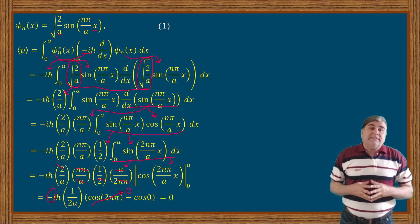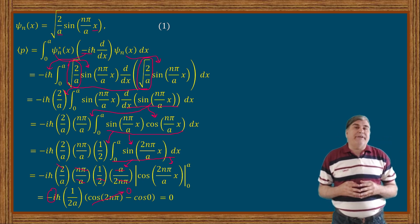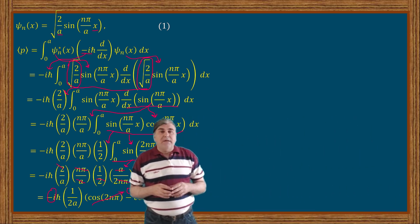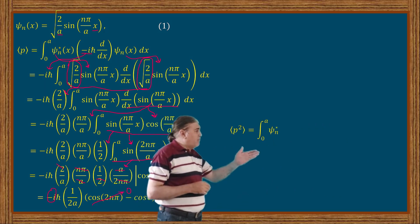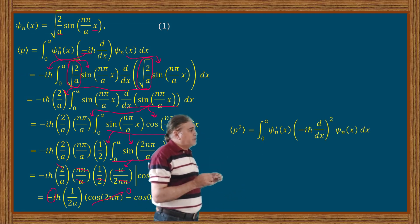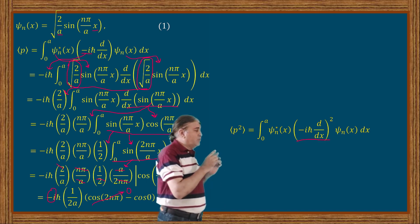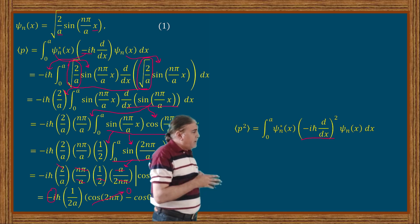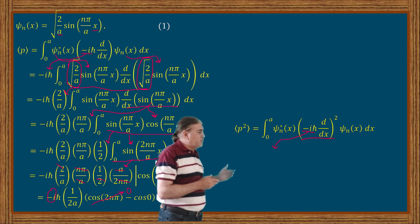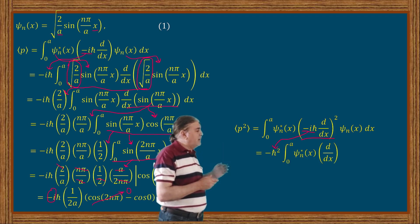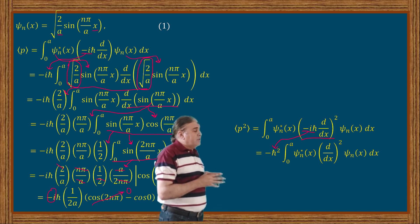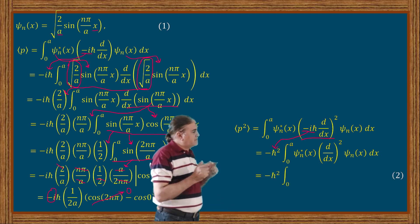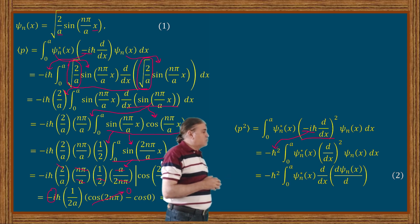Now let us see what happens to the expectation value of the square of momentum — is it also equal to zero? The expectation value of the square of momentum can be expressed by sandwiching the square of the momentum operator inside the conjugate of the wave function and the wave function, and integrating with respect to position x. Squaring minus iota h-bar gives minus h-bar squared, which I take outside the integral. I rewrite d/dx squared in the form of d/dx times d/dx and express this into its final integral form.